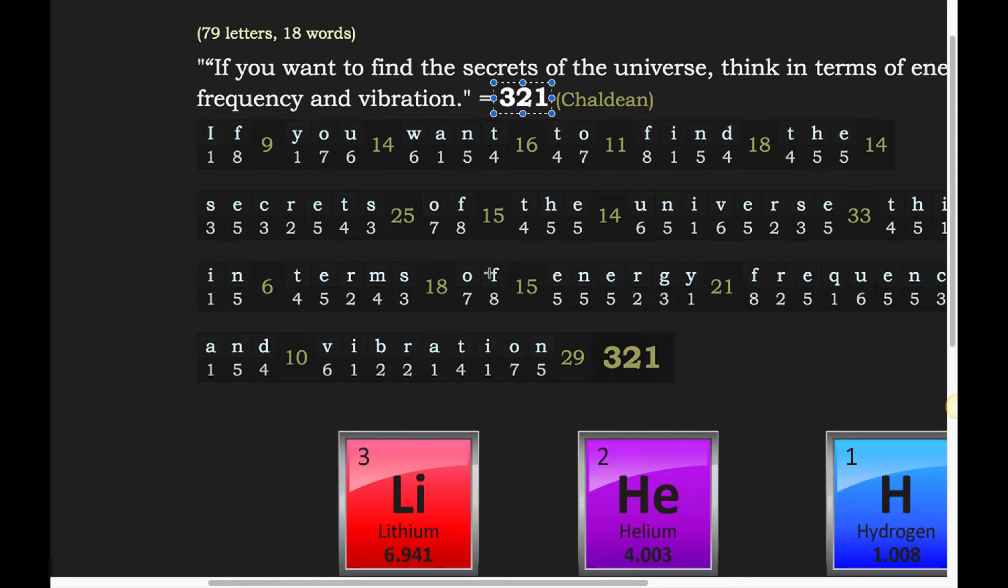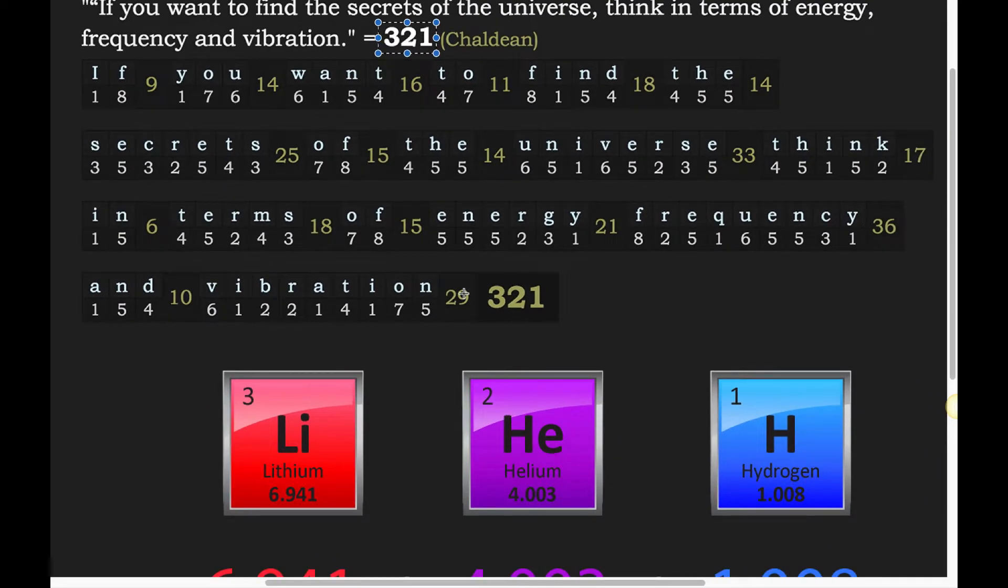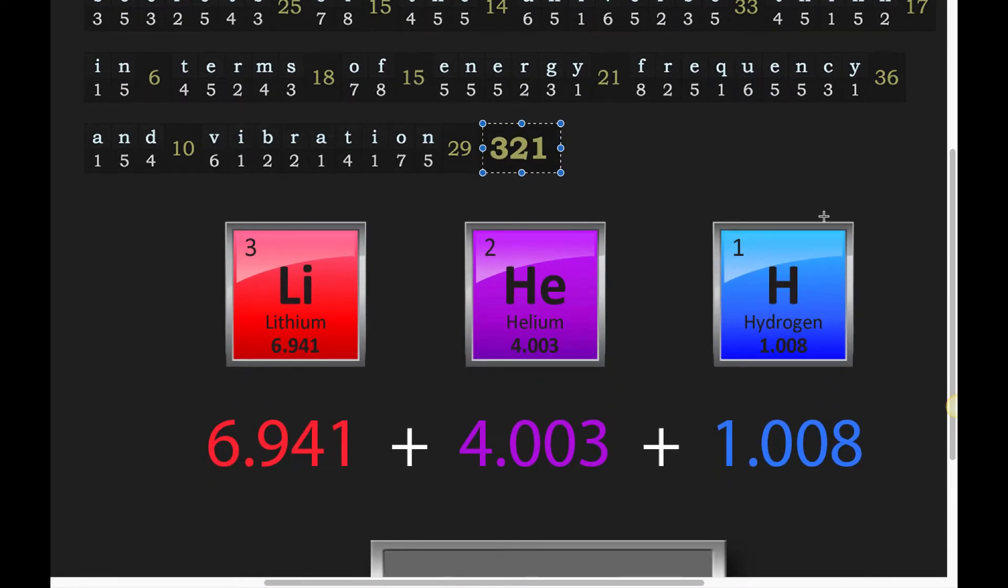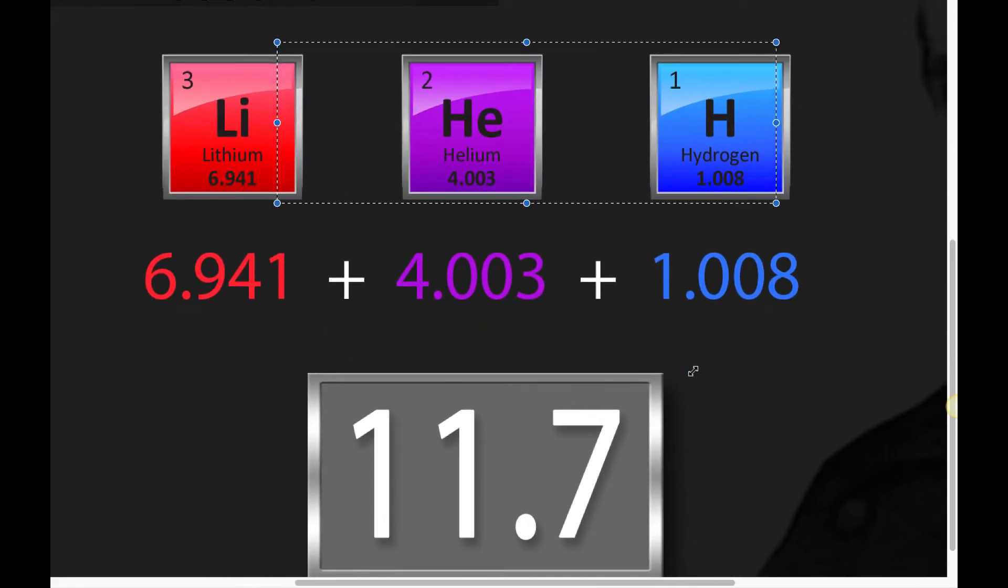He said, 'If you want to find the secrets of the universe, think in terms of energy, frequency, and vibration.' One of his famous quotes. The standouts for this quote - it has 79 letters. And what's the 79th element on the periodic table? It's gold. Maybe a subtle thing that I find. What if it was true? What if it supported this statement? What if gold, having 79 letters, was important to this? Numerology-wise, this is a statement that carries the 321.